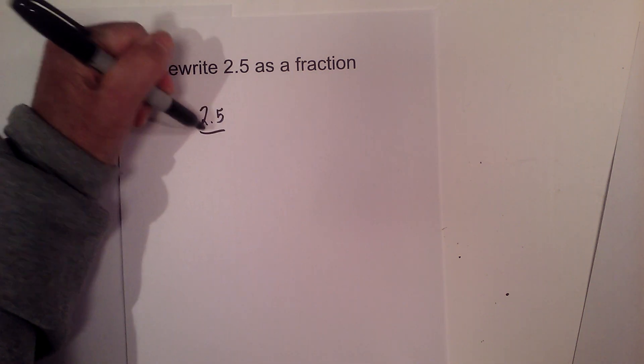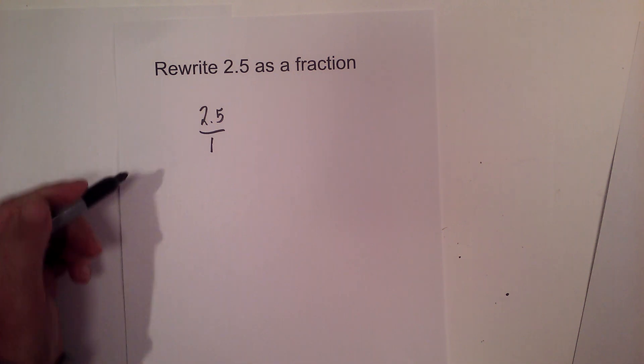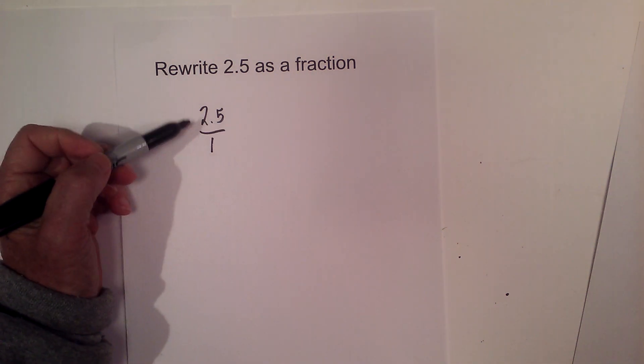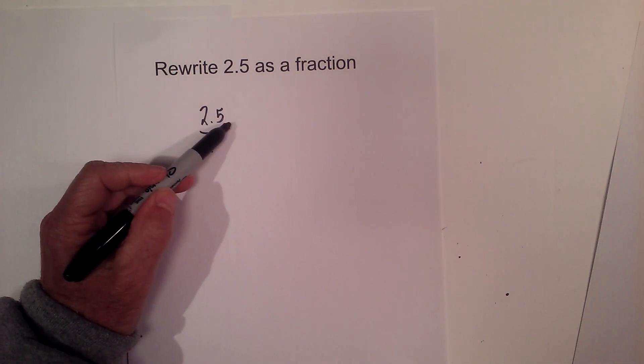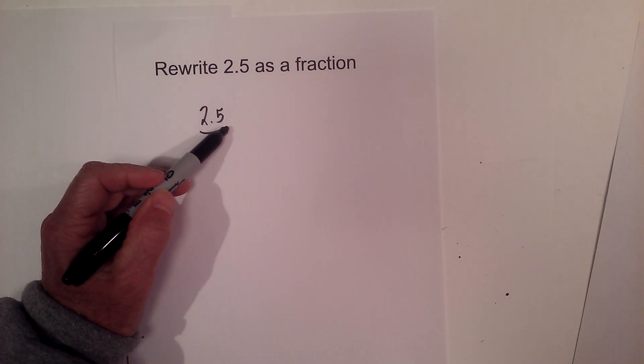I have 2.5 and I'm going to start by writing it over 1 and creating a fraction. Now what I want to do is get rid of the decimal by multiplying it by a number to where the decimal is moved to the far right.